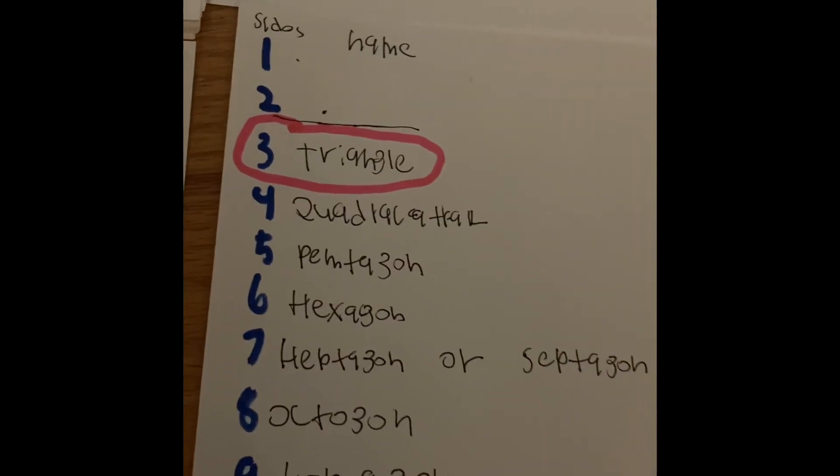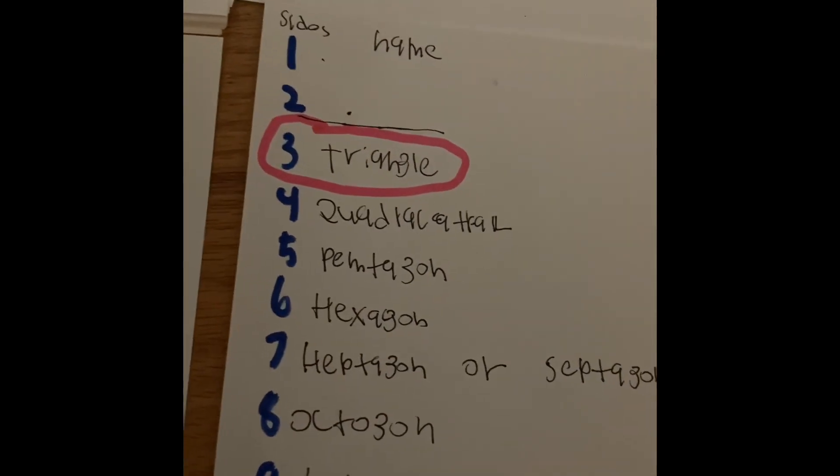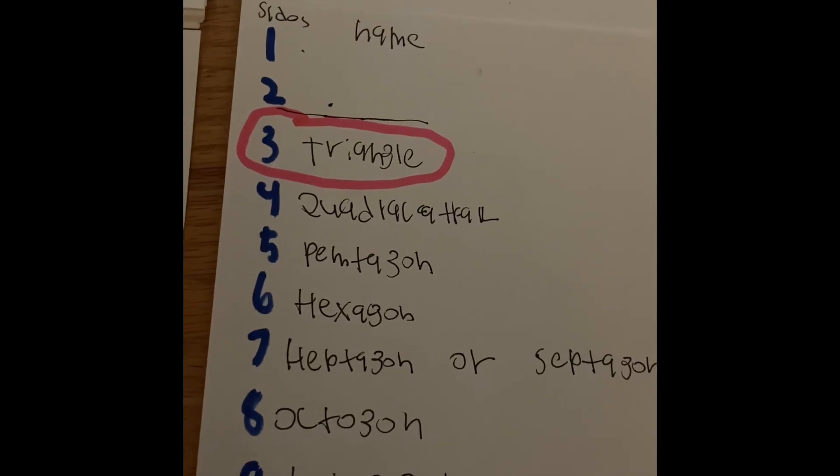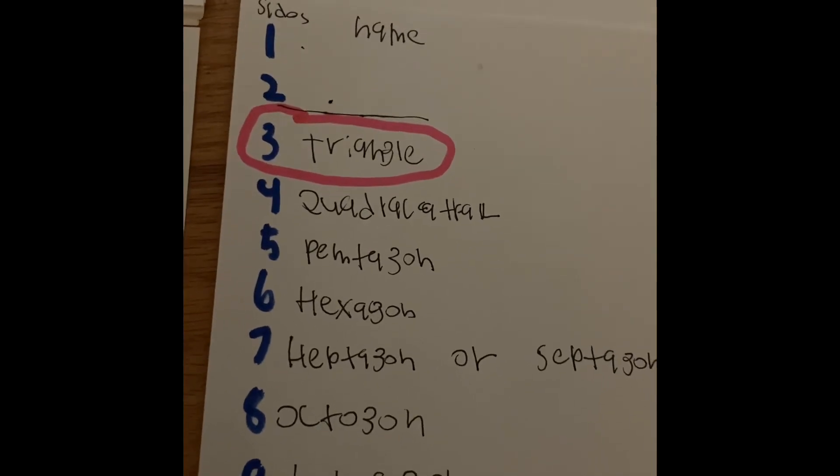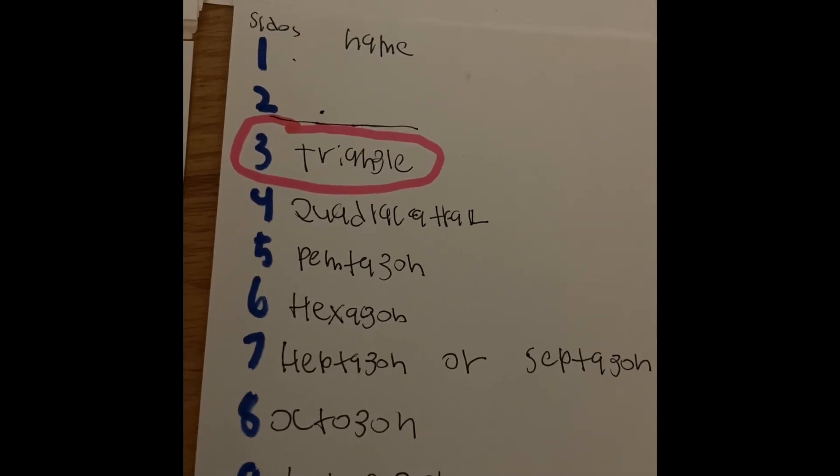The reason why we have triangles as colored right here in the pink outline is because it's going to be very, very important when you understand geometry and in the most commonly used shapes when you learn your high school geometry.